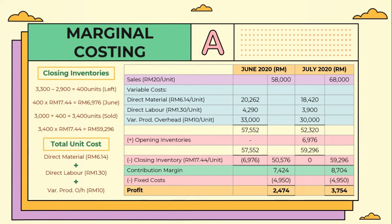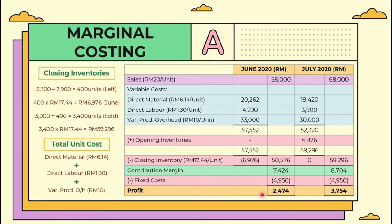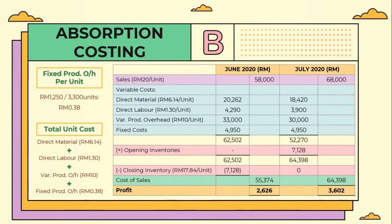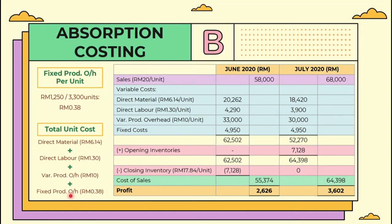As we already learned in chapter 5, there are 2 techniques in preparation of the income statement: the marginal costing technique and the absorption costing technique. Our income statement is as shown on the screen. In calculating closing inventory, we must first find the total unit cost, which consists of direct material, direct labor, and variable production overhead, amounting to 17 ringgit 44 cents. For absorption costing technique, the total unit cost for closing inventory is different because it also includes fixed production overhead. In July 2020, we have no closing inventory because our company managed to sell all of our Chocojak.